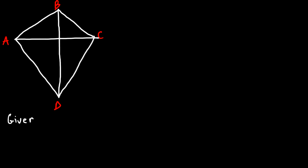In this video we're going to talk about how to prove if a quadrilateral is indeed a kite. We'll call the vertices A, B, C, and D. One way to prove we have a kite is to show that BD is the perpendicular bisector of AC.